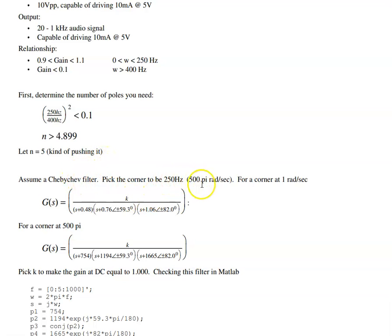So then once I know the number of poles, I pick my type of filter, Chebyshev, Butterworth, whatever you like. I kind of like Chebyshev filters, so I'll pick a Chebyshev filter. This is a fifth-order Chebyshev filter with a corner at 1 radian per second. To make it 250 Hz, or 500 pi radians per second, scale all the poles by 500 pi, gives you this transfer function.